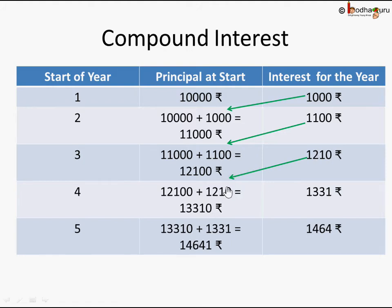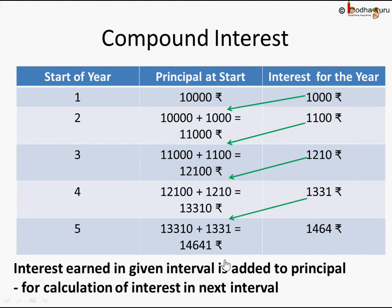The 1,210 gets added to the year four principal, so year four principal becomes 12,100 plus 1,210 equals 13,310 rupees. The interest earned in a given period is added to the principal for the next year's interest calculation, which is why the principal keeps increasing every year. In compound interest, the principal for each year keeps increasing automatically and hence the interest keeps increasing.